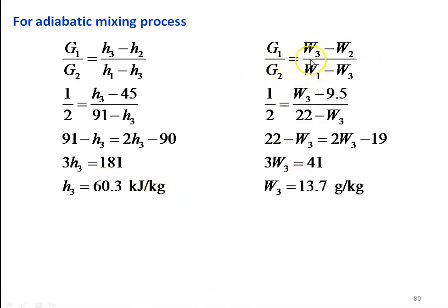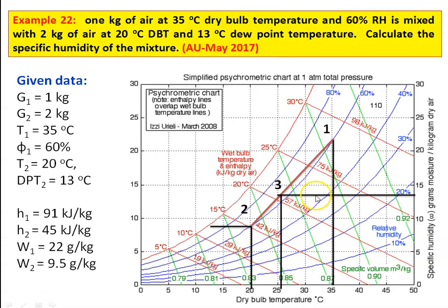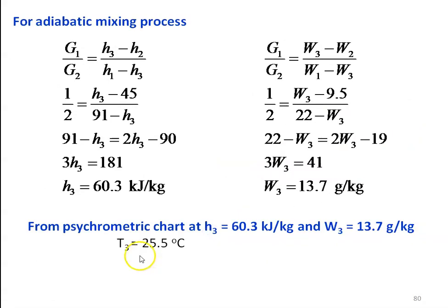Similarly, for specific humidity: G1/G2 = (W3 − W2) / (W1 − W3). Substituting known values: 1/2 = (W3 − 9.5) / (22 − W3). Cross-multiplying: 22 − W3 = 2W3 + 19. Rearranging: 3W3 = 41, so W3 = 13.7 g/kg. Using this value, go back to the psychrometric chart, locate point 3, and find the temperature, which is 25.5°C. Using the psychrometric chart is very easy to solve the problem; otherwise you have to remember all the equations. The important thing is to carefully locate and accurately read values from the chart.